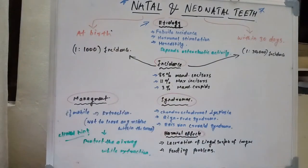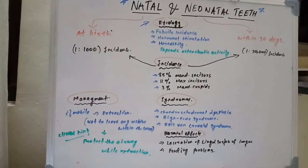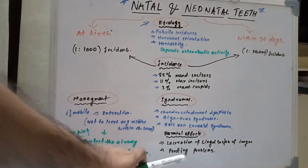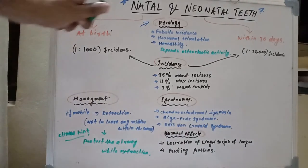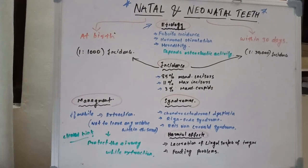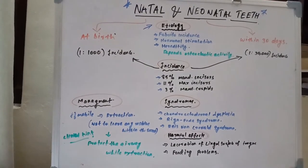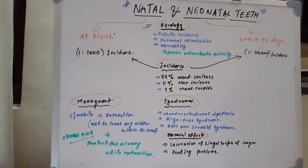The harmful effects of natal and neonatal teeth: the most common is laceration of the baby's tongue — specifically the lingual or ventral surface — which is continuously injured by the sharp edges of these teeth, mostly the mandibular incisors. There are also feeding problems due to interruption by these teeth, and the mother also experiences difficulties with feeding the baby.